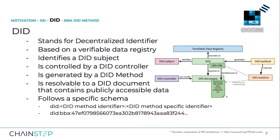A DID is a resolvable, decentralized identifier. It is backed by a verifiable data registry, which in most cases is a blockchain. A DID identifies a DID subject, which can be of any kind — a person, a process, a company, a device, etc. A DID is controlled by a DID controller, which is in many cases the same entity as the DID subject. Only the DID controller is able to modify the DID document. Every DID is resolvable into a cryptographically linked DID document, which contains public accessible information like public keys and service endpoints. The DID resolver is responsible for resolving a DID into its corresponding DID document, similar to a browser that resolves an HTTP link into an HTML document.